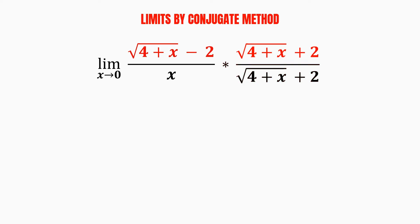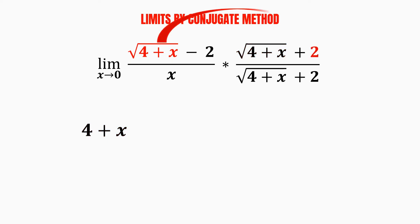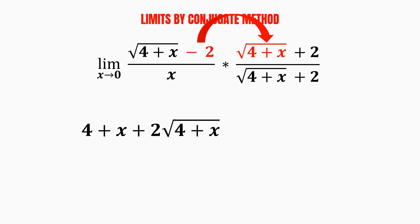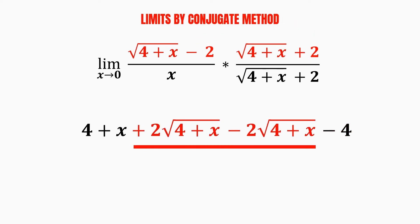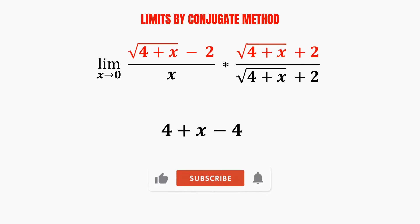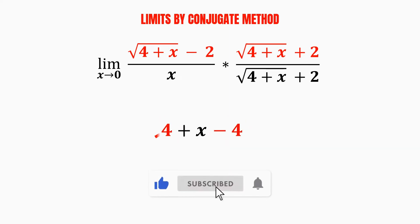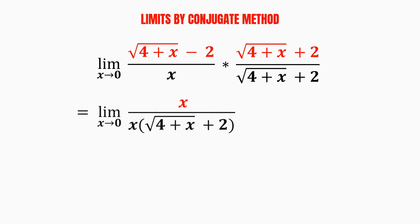Now, we multiply both expressions in the numerator. Starting with the square root of 4 plus x multiplied by the square root of 4 plus x, we end up with 4 plus x without the square root. Then we multiply the square root of 4 plus x by 2, and multiply negative 2 by the square root of 4 plus x. Lastly, negative 2 multiplied by 2 gives us negative 4. Since we have a positive and negative 2 multiplied by the square root of 4 plus x, we can cancel them out. And we have 4 and minus 4, which cancel out as well, so we only end up with x.